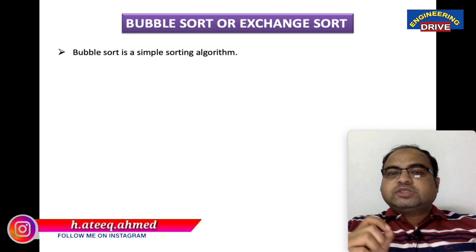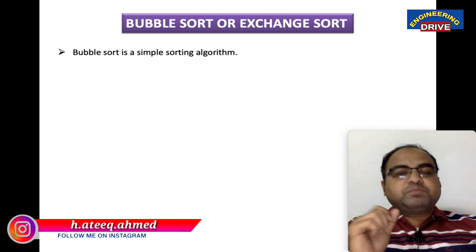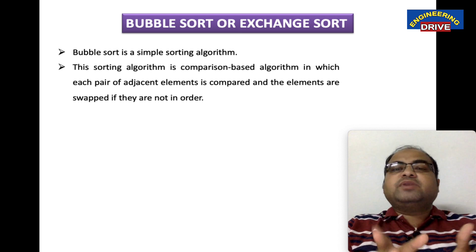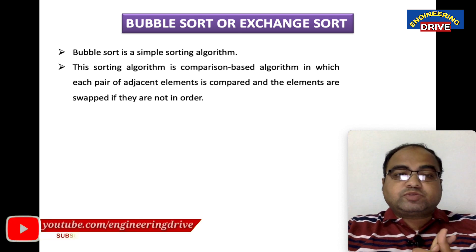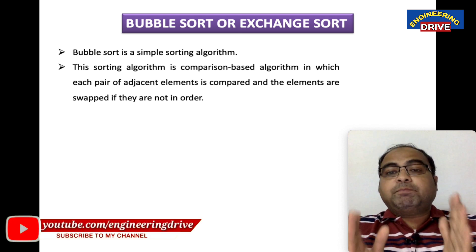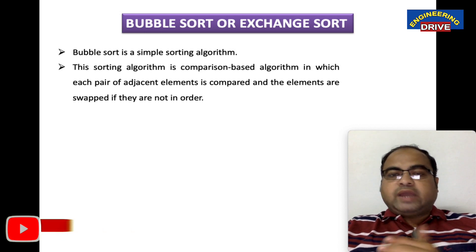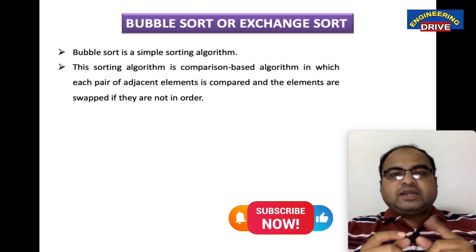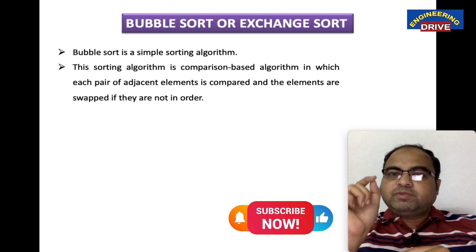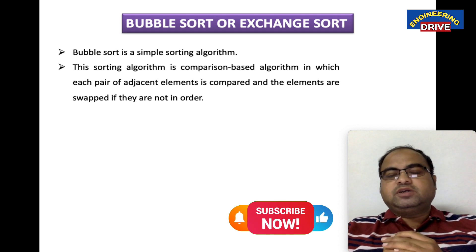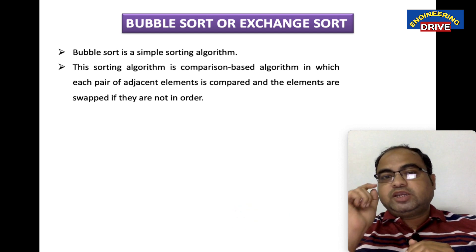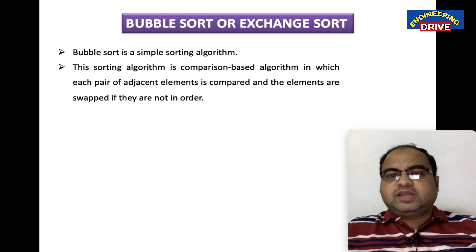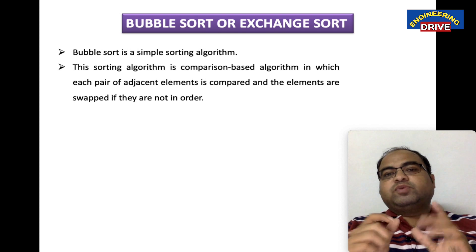Bubble sort is also a simple sorting algorithm and it also has one similar feature compared to the previous algorithms. It is also a comparison-based algorithm. The unique thing in this algorithm — in every sorting method there will be one unique feature that we need to grasp and keep in our brain.